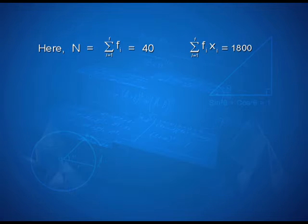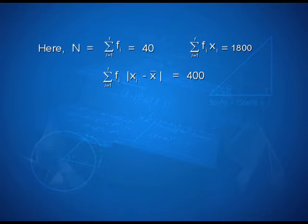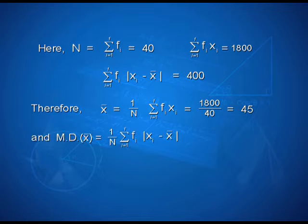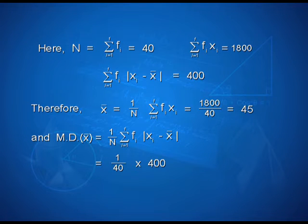Now let us look at the computation. Here, n equals the summation of f_i from i = 1 to 7, which equals 40. The summation of f_i * x_i from i = 1 to 7 equals 1800. The summation of f_i * |x_i - x-bar| from i = 1 to 7 equals 400. Therefore, x-bar equals (1/n) * summation of f_i * x_i = 1800 / 40 = 45. And the mean deviation about the mean equals (1/n) * summation of f_i * |x_i - x-bar| = (1/40) * 400 = 10. Therefore, the mean deviation is 10.